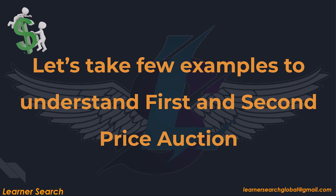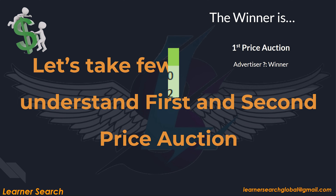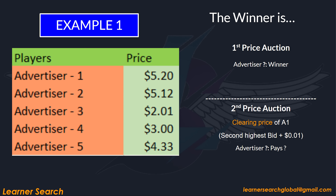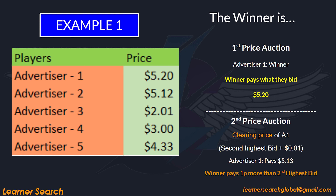Let's look at a few more examples for better understanding of first and second price auctions. In Example 1, the winner is Advertiser 1. In the first price auction, the final price settles at $5.20, whereas in the second price auction, the second highest bid plus $0.01 totals around $5.13.